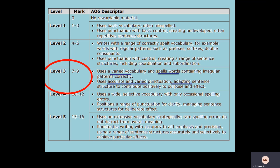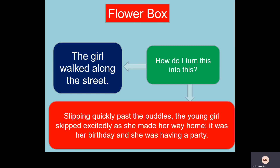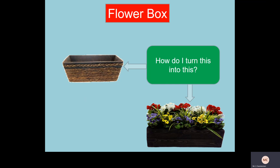The flower box is the skill we're focusing on, and it looks at taking a simple sentence like 'the girl walked along the street' and through a series of processes creating something more complex — for example: 'slipping quickly past the puddles, the young girl skipped excitedly as she made her way home; it was her birthday and she was having a party.' The analogy is this idea of the flower box: we start with a basic structure and then add words and phrases to make it more colourful, engaging, and detailed.